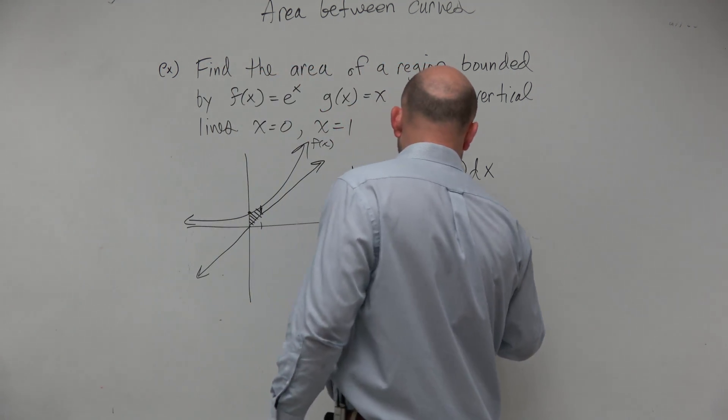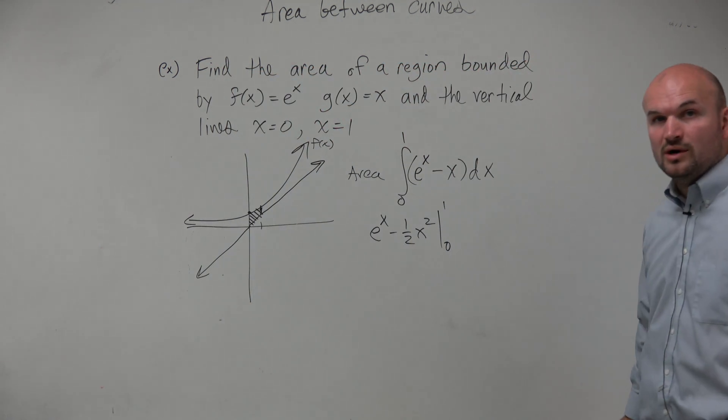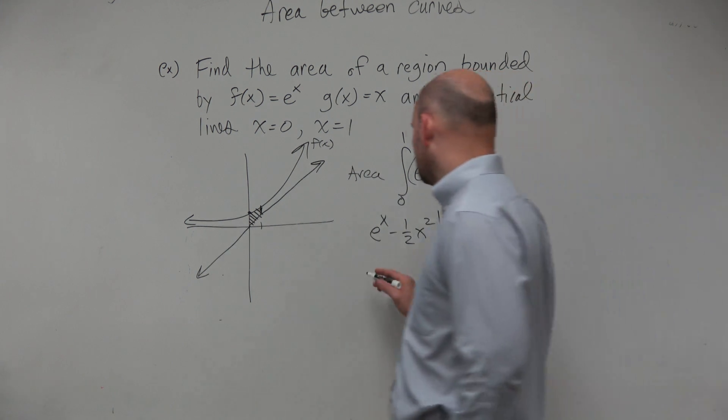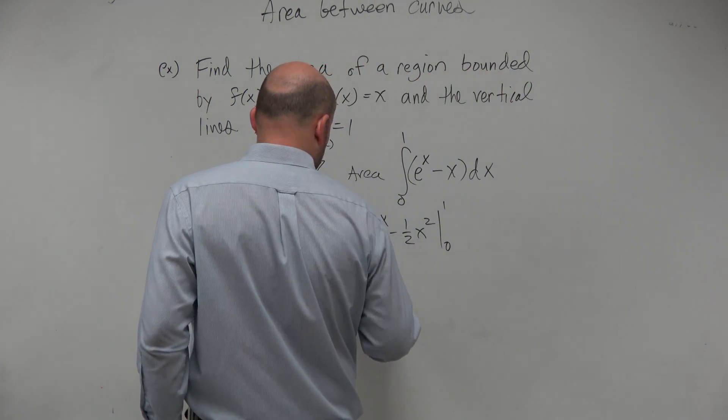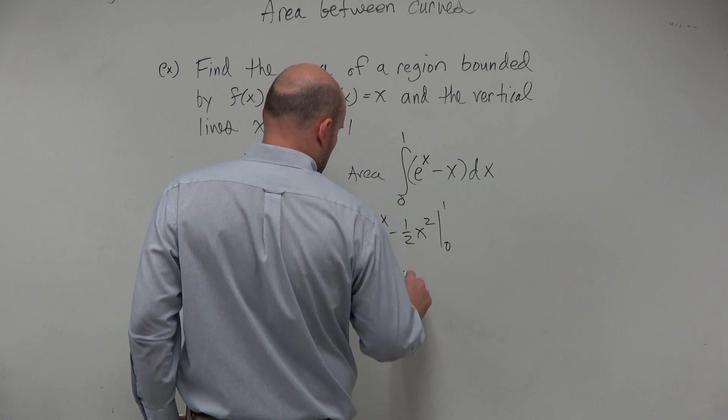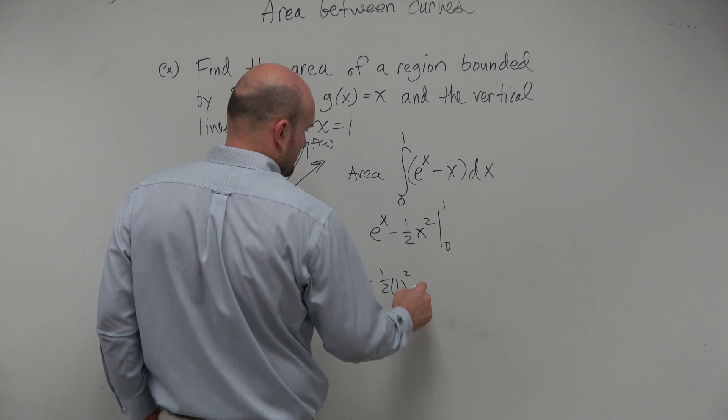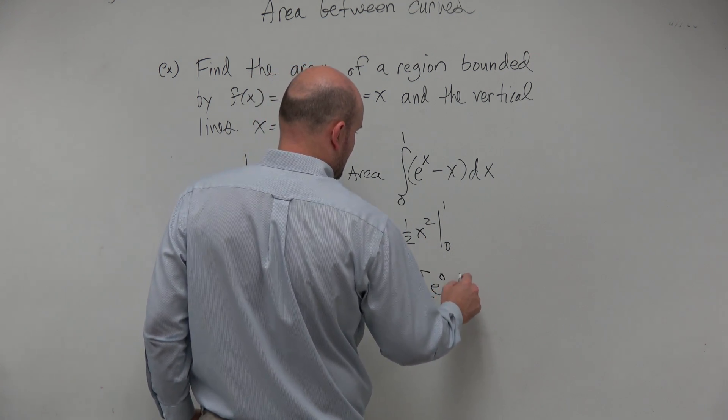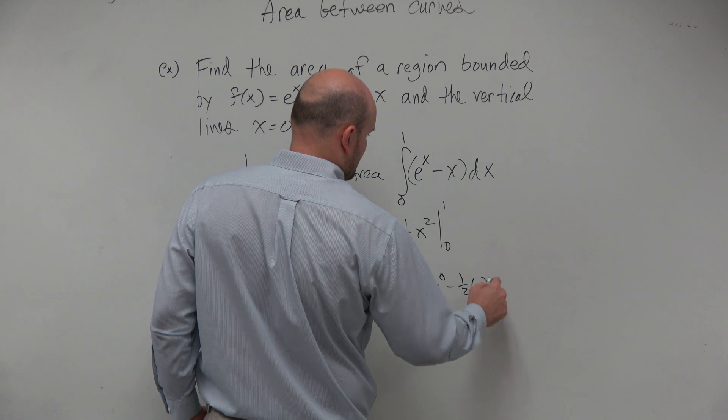And we're going to evaluate that from 0 to 1. So we have e to the 1 minus 1/2 times 1 squared, minus e to the 0 minus 1/2 times 0 squared.